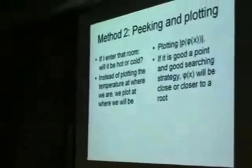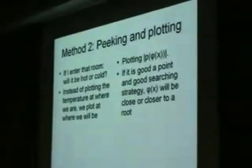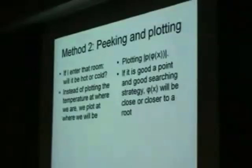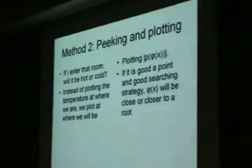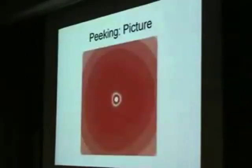Here's the second idea. Instead of checking every room, I'm asking the person I'm playing with: if I enter that room, will it be hot or cold? So instead of measuring the temperature at where I am, I'm asking: if I follow my search strategy, what would be the temperature at the point I go next? If my search strategy is good, then I will be much closer to the roots next time. So we would not waste too much time — it's kind of running one step ahead of me, going forward in time. And as you can see, there is much more red area, and the roots are much more visible.